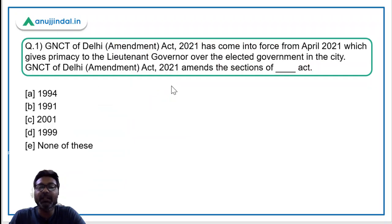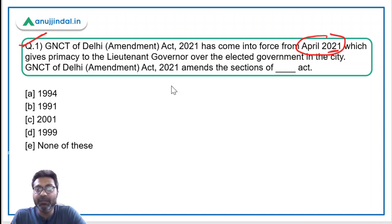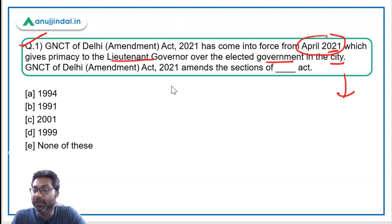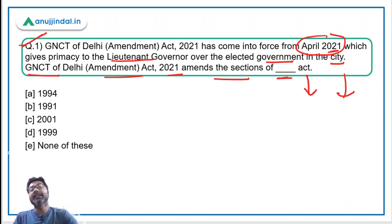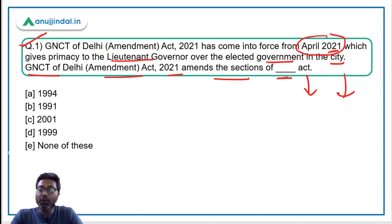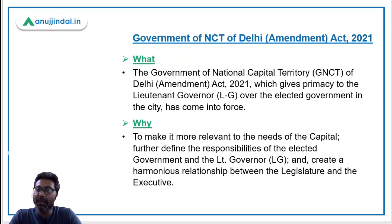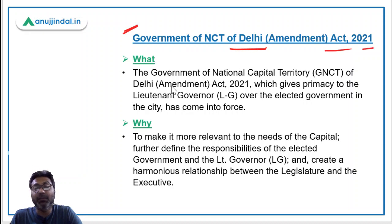Let's begin with the very first question which is about the GNCTD Amendment Act of 2021, which came into force from April 2021. It gives primacy to the Lieutenant Governor over the elected government in the city. In fact, it is written in this amendment act that the government in Delhi means the Lieutenant Governor. The question is: GNCTD of Delhi Amendment Act 2021 amends the section of which act?